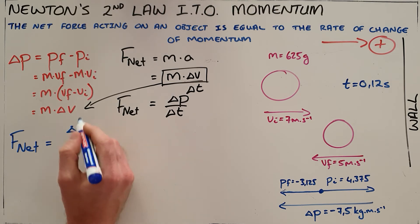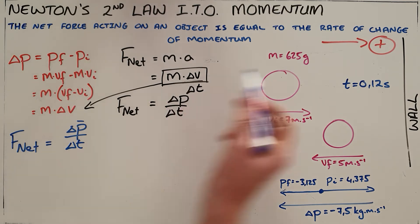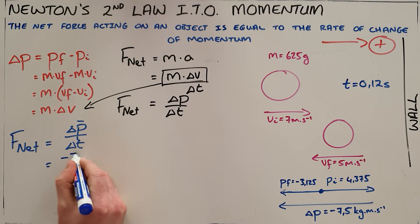We say that the net force is equal to the change in momentum over the change in time. The change in momentum we calculated earlier as negative 7.5.